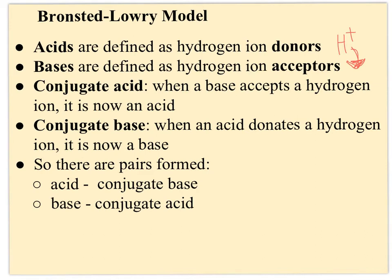The Bronsted-Lowry model also introduces conjugate acids and conjugate bases. An acid, once it loses its hydrogen ion, becomes a base — its conjugate base. A base, when it accepts the hydrogen ion, becomes an acid — its conjugate acid. So in the reverse reaction, they switch roles. A conjugate acid forms when a base accepts H+; a conjugate base forms when an acid donates H+. The acid becomes the conjugate base, the base becomes the conjugate acid — they are conjugate acid-base pairs.